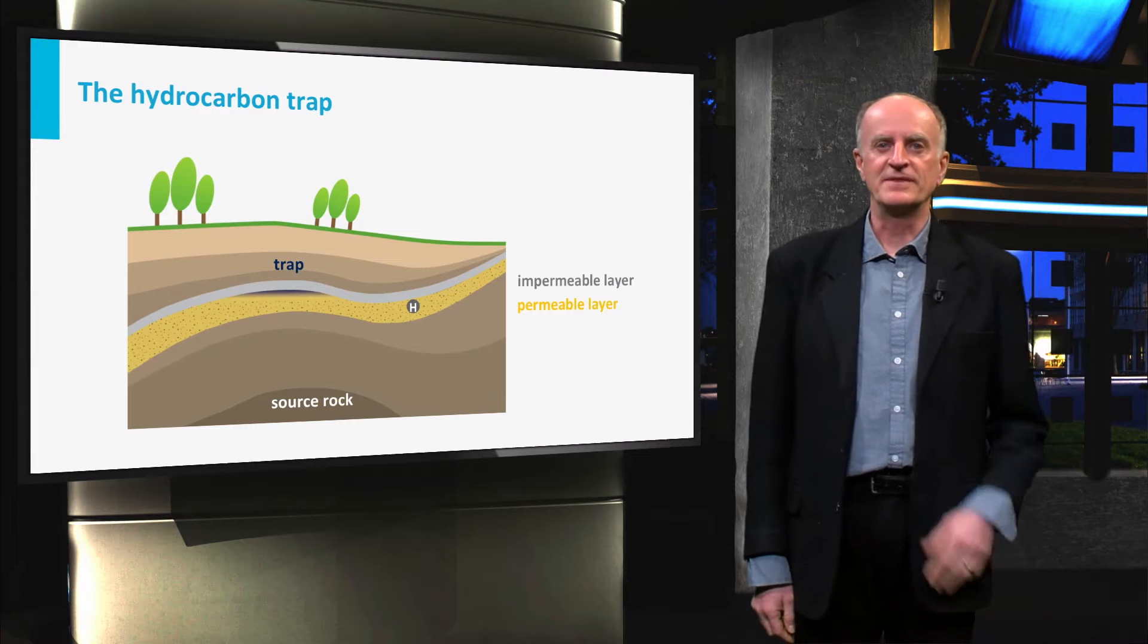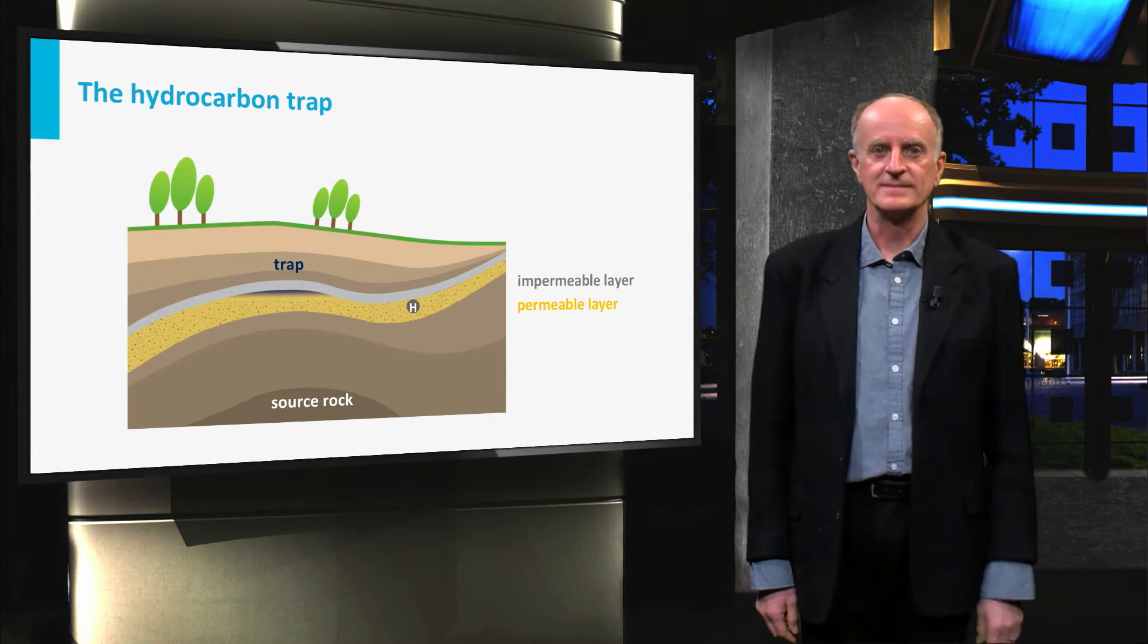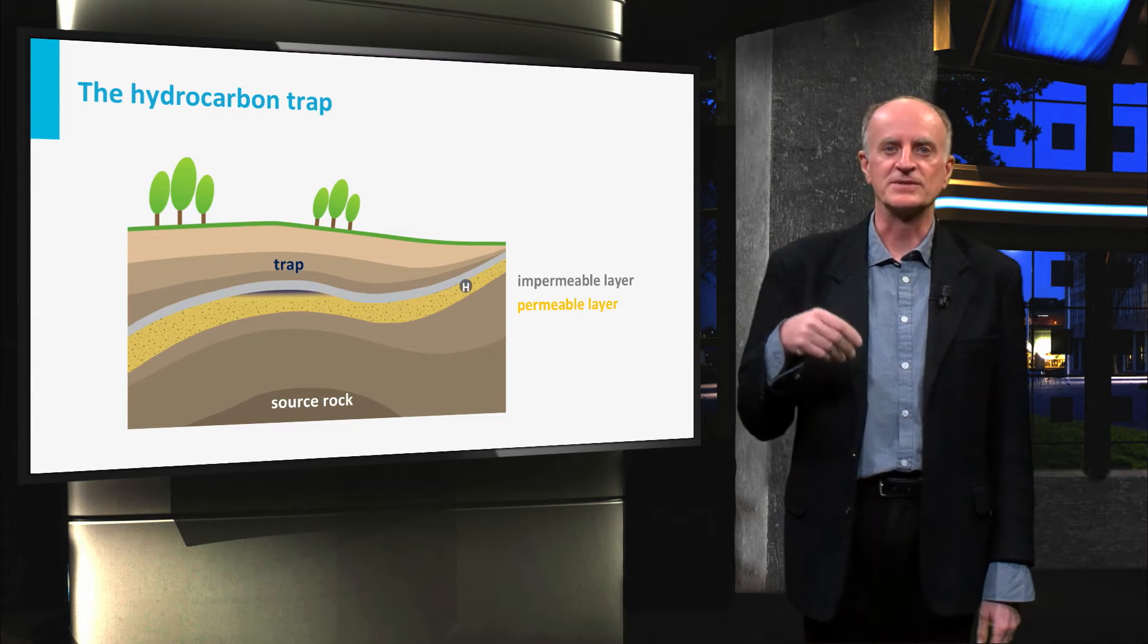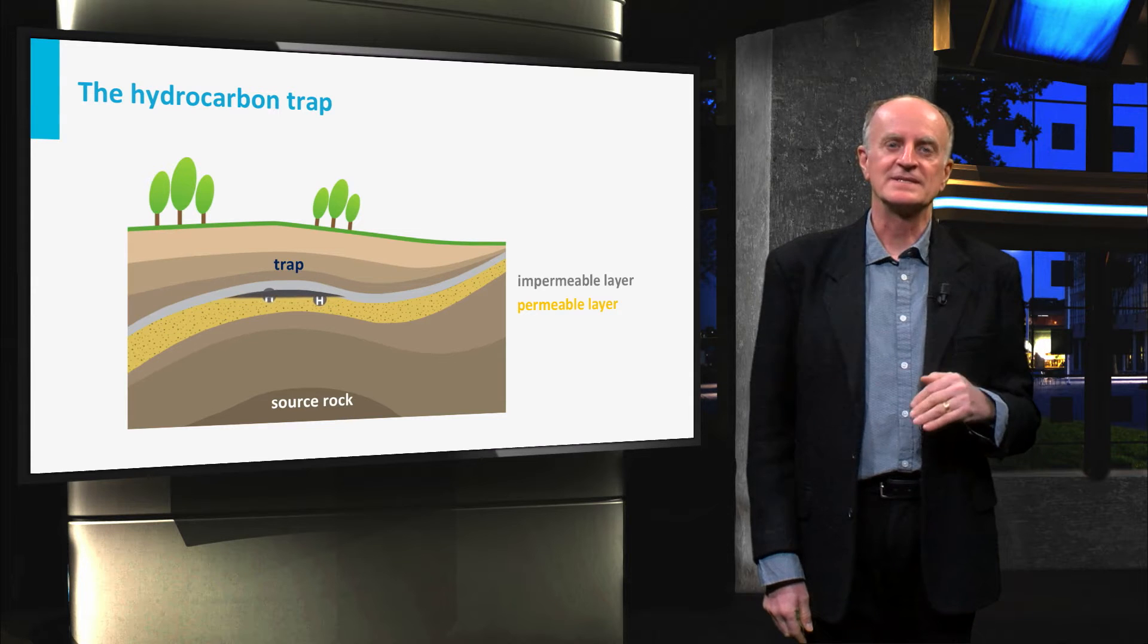During the last clip we left the hydrocarbon molecules migrating along the permeable layer. Some of them simply reach the surface, others cannot do this as they are trapped.